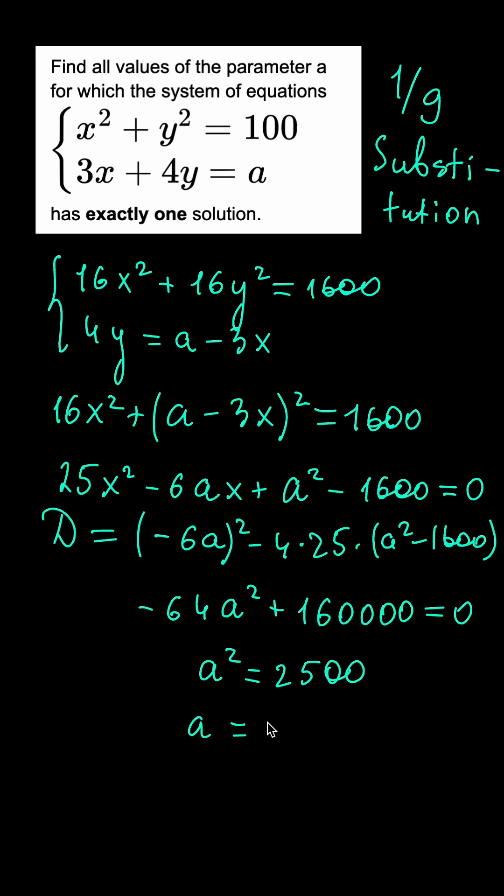So there are two values of the parameter a for which this system of equations has exactly one solution, plus and minus 50.